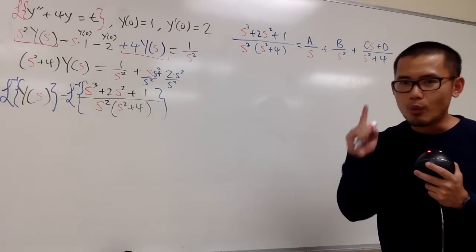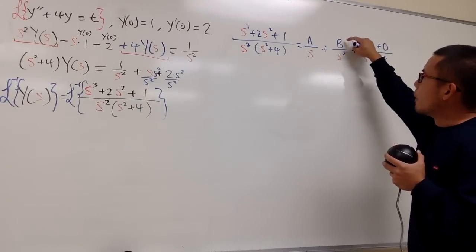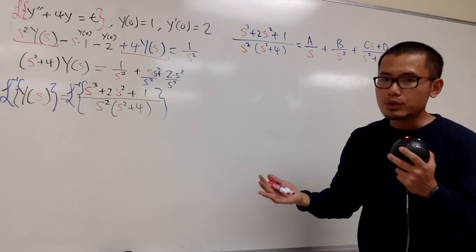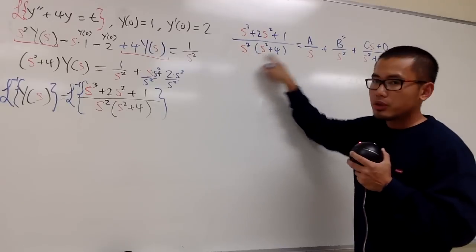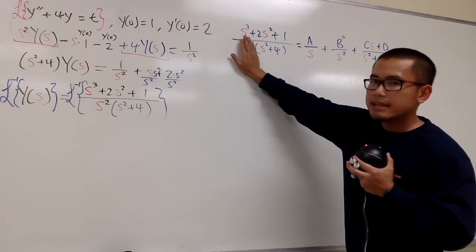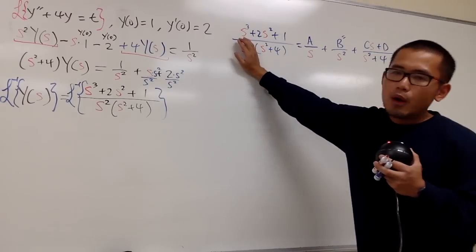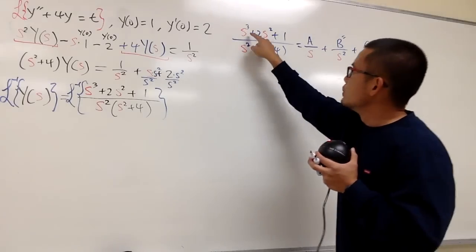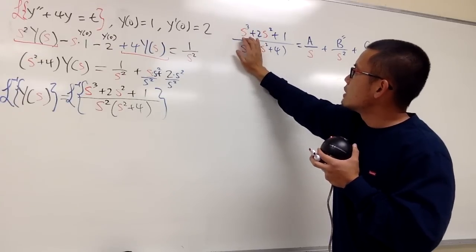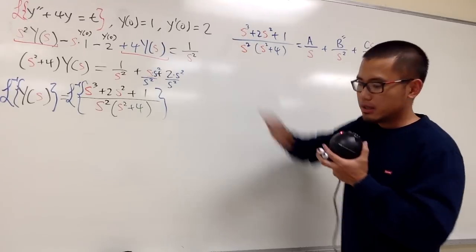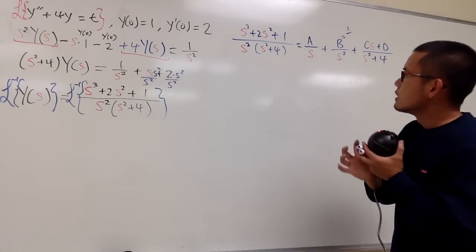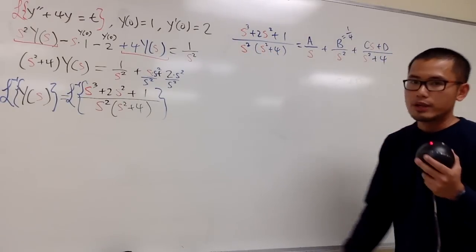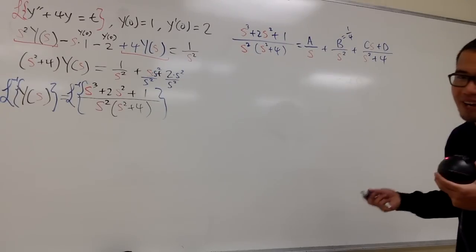We can do the cover-up method to solve for B, because we have the denominator s squared which matches exactly. To solve for B, I cover up the s squared with the same denominator and plug in s equal to 0 to make that factor equal to zero. On the top, 0 to the third power plus 2 times 0 squared plus 1 gives us 1. Then plugging 0 into s squared plus 4 gives 4. So B equals 1 over 4 right away.